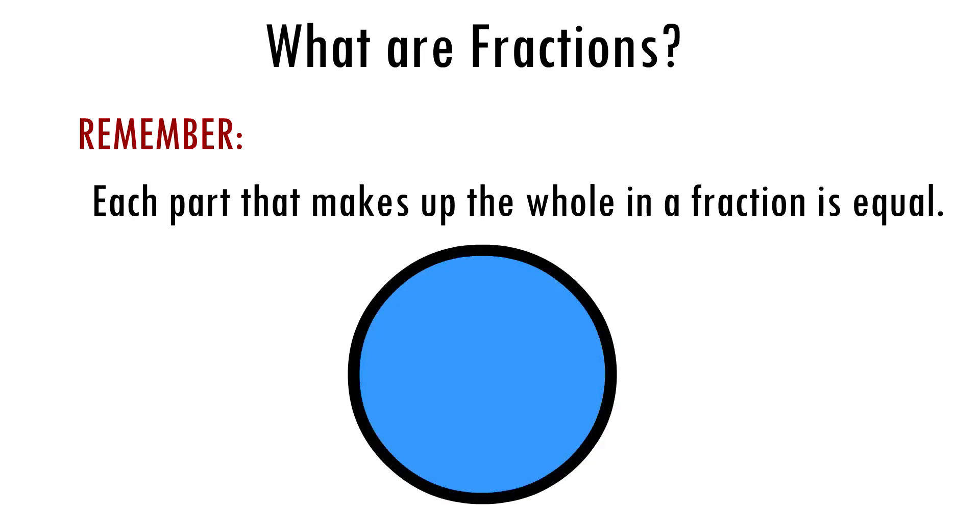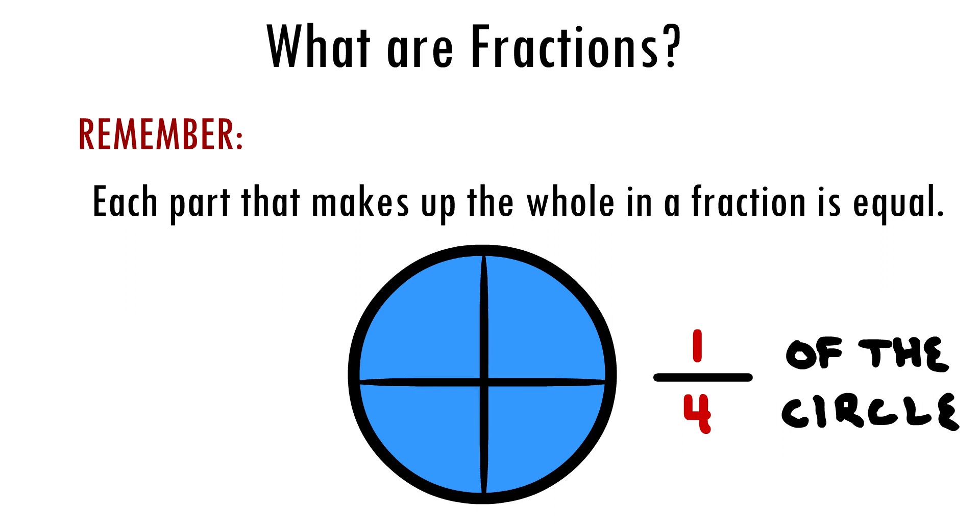So, if I had a circle and wanted to take one-fourth of the circle, that means I am splitting the circle into four parts, and each part is equal in size. Then, I will take one of those parts.